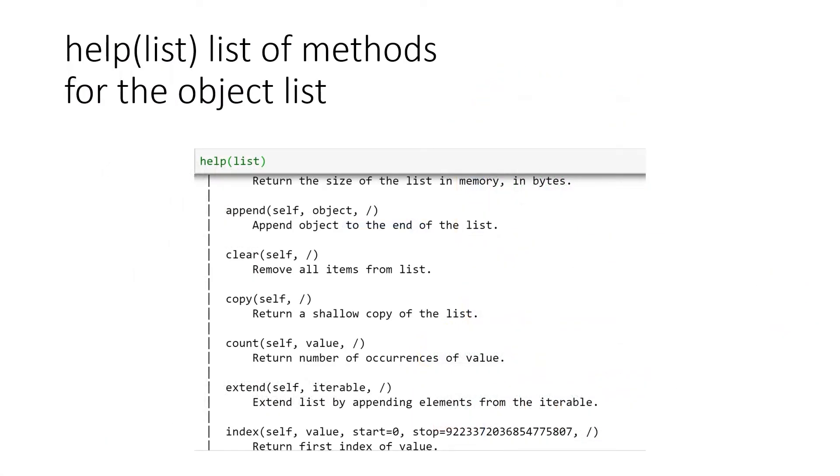The help function is also quite useful, because you can just use the help function and apply it to the different objects we have. For example, here we do it with lists, and the output will be a huge list of the different methods that you can actually apply to lists. So you could also do that with help floats or help integers to always find out what kind of methods you actually have for each different object or data type.